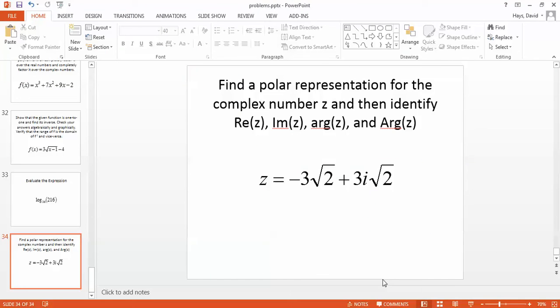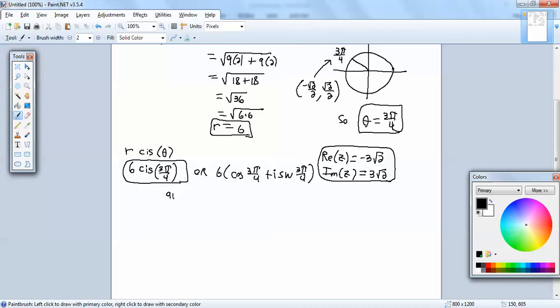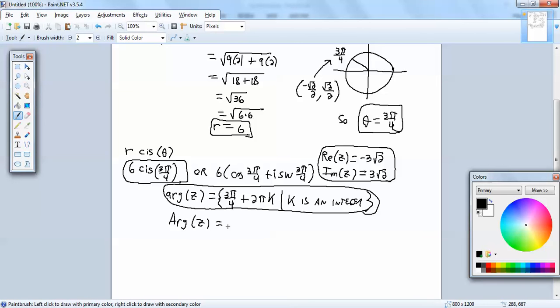They're also wanting us to find the argument of z. And our theta starts at 3 pi over 4. So, we put 3 pi over 4. You always put theta. And we can add and subtract 2 pi over and over to get back to this same location. So, we're going to have plus 2 pi k, given k as an integer. Now, we also want the principal argument, uppercase A of z, which is simply theta, which is 3 pi over 4. And those will be our answers.